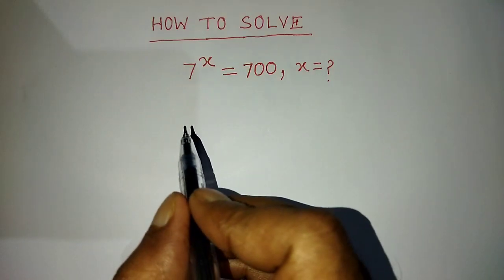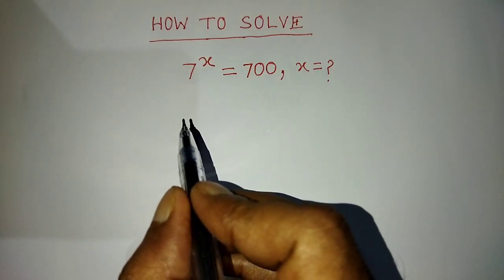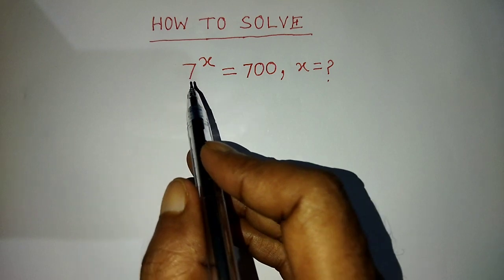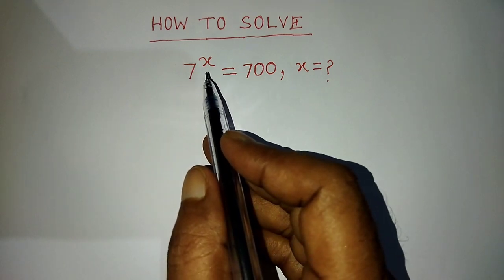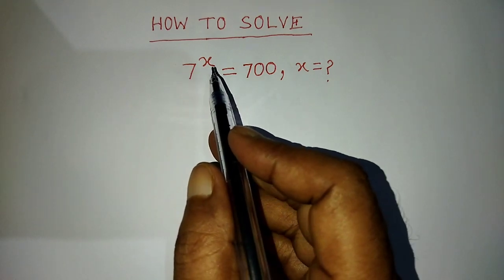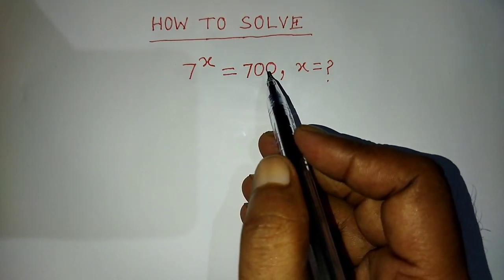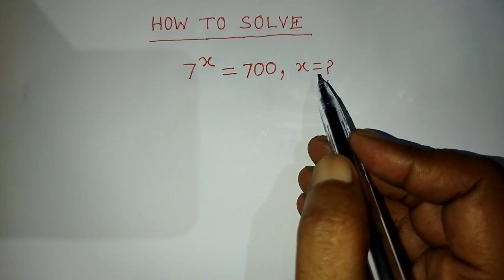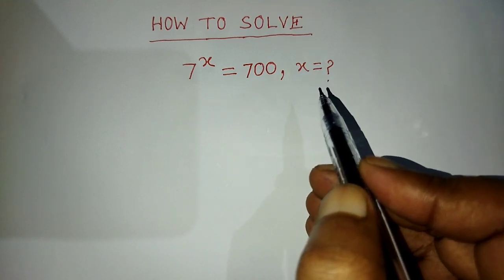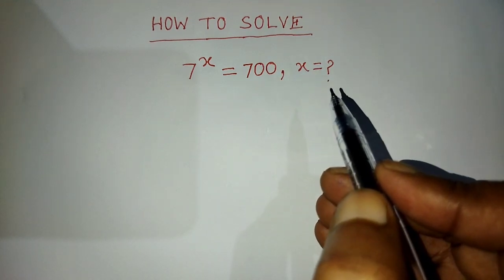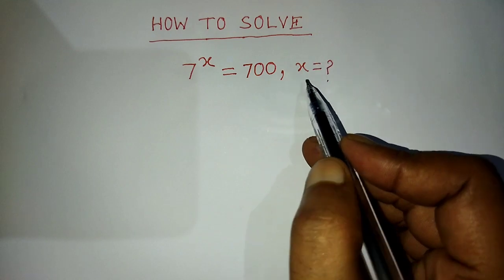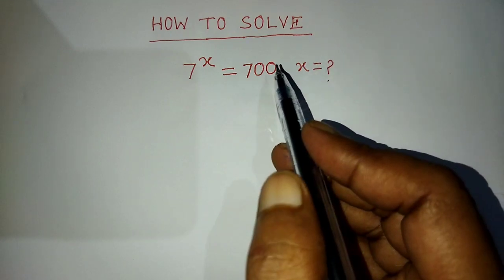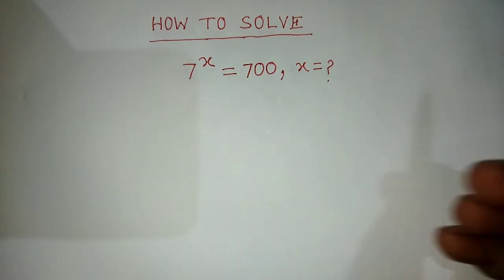Hi guys, welcome back to my channel, Alim Mashvlog. Today our question is: if 7 to the power x is equal to 700, then find the value of x. In this video, I will tell you how to find the value of x from this exponential equation.